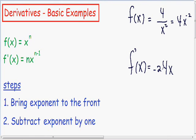I'm going to put a little dot in between the negative 2 and the 4 just to show that they're being multiplied by each other. And our second step is we want to subtract the exponent by 1. So since we had a negative 2 exponent in our original function, negative 2 minus 1 is negative 3. So we'll have a negative 3 in our derivative.